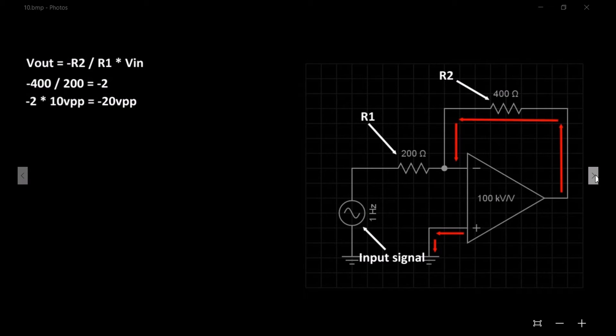When a signal is amplified we refer to this as the gain of the amplifier. Gain is represented by the letter AV. Gain is calculated on an inverting amplifier by dividing negative R2 by R1. Negative 400 divided by 200 gives us a gain of negative 2.